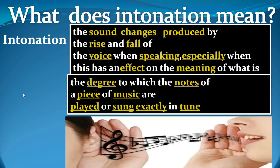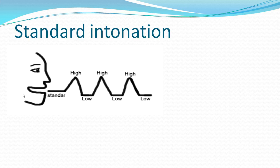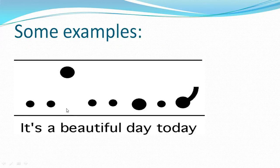Intonation also refers to the degree to which the notes of a piece of music are played or sung exactly in tune — not too high, not too low, but balanced between high and low. For example: 'It's a beautiful day today.' We stress the word 'beautiful' because it's important. Adjectives, nouns, and proper nouns get stress.